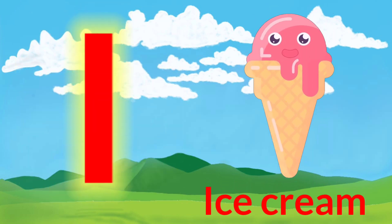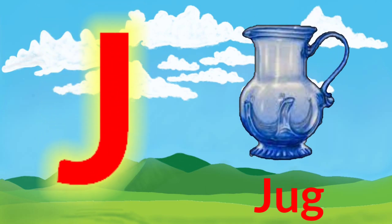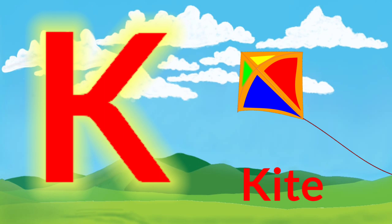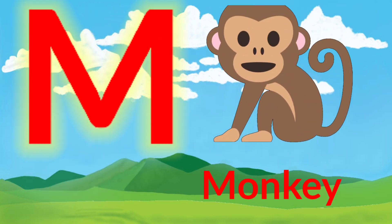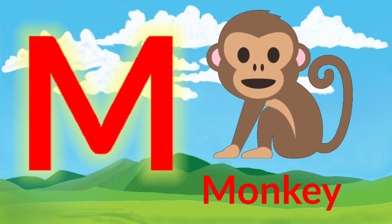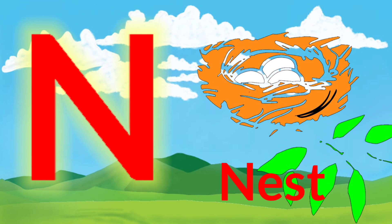I for ice cream. J for jerk. K for kite. L for lion. M for monkey. N for nest.